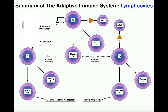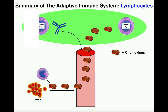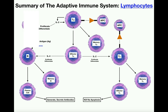Interleukin-2 is going to do two things. One, it's going to cause these helper T cells to proliferate — meaning to divide and make copies of themselves, because we need a bunch of cells for an immune response. Two, IL-2 is also going to trigger these helper T cells to differentiate, meaning to transform into a slightly different kind of cell. We get two types: a memory helper T cell and an effector helper T cell.